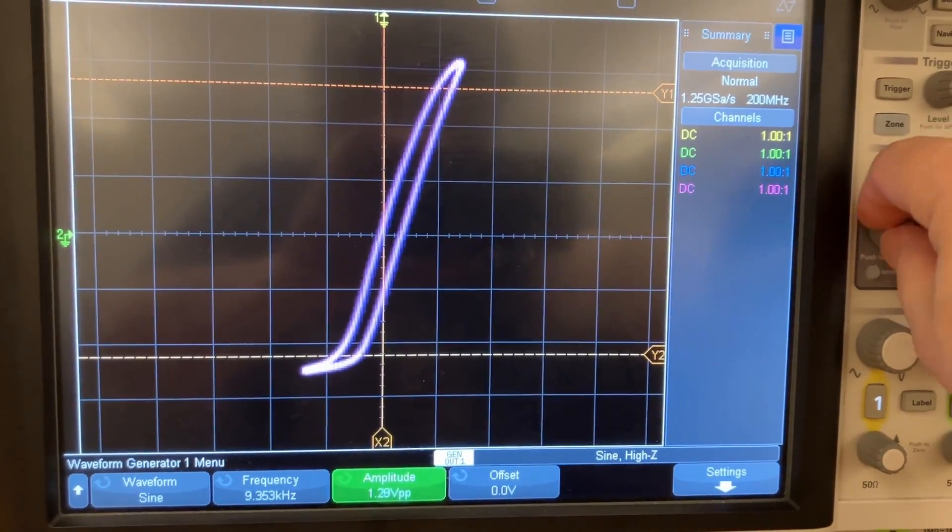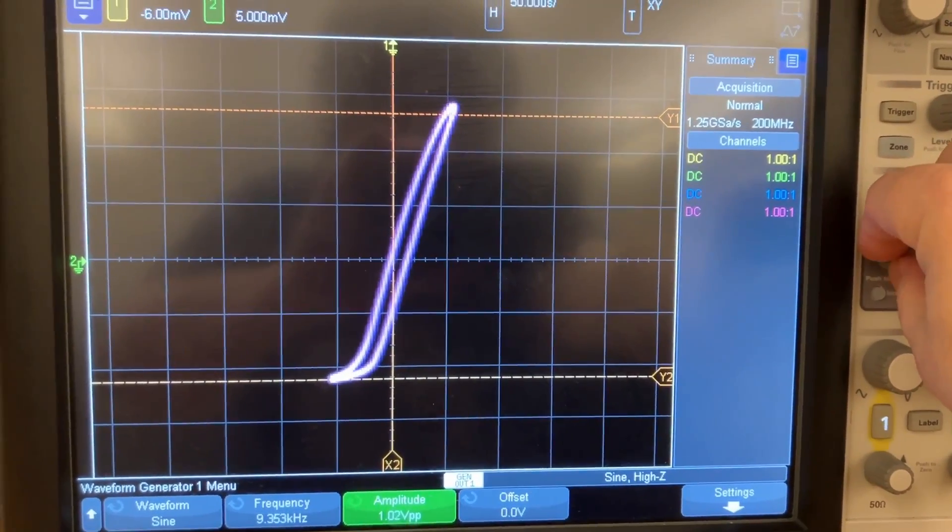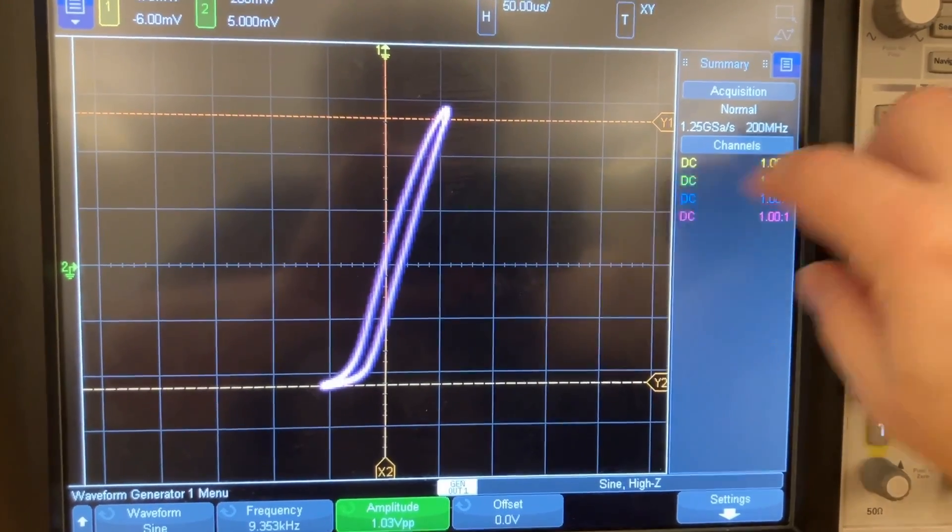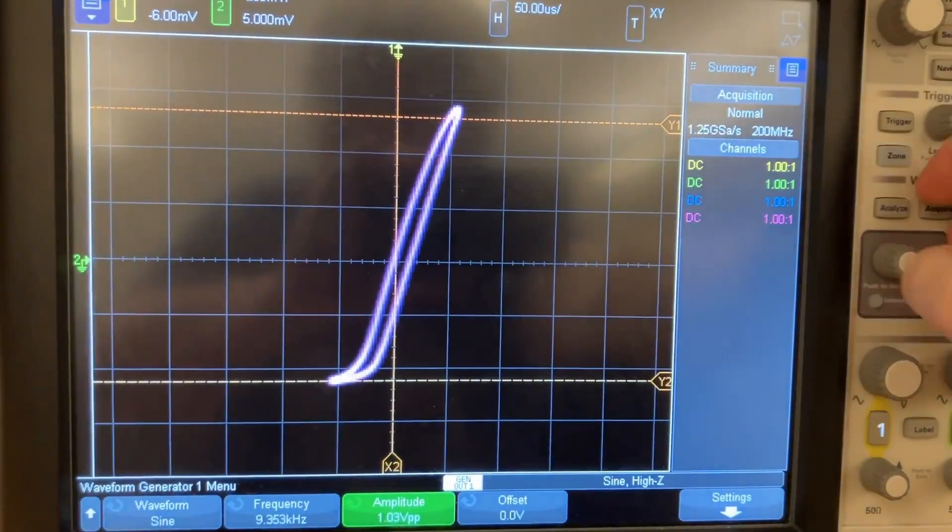But if I get up to around 1-volt peak-to-peak, it starts to round out on the top end. There we go.